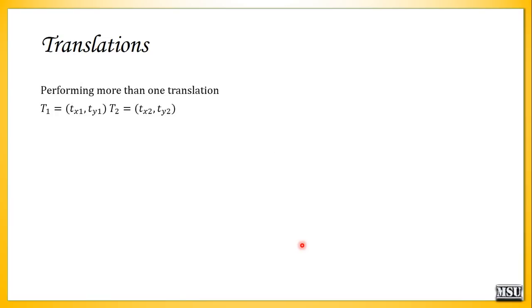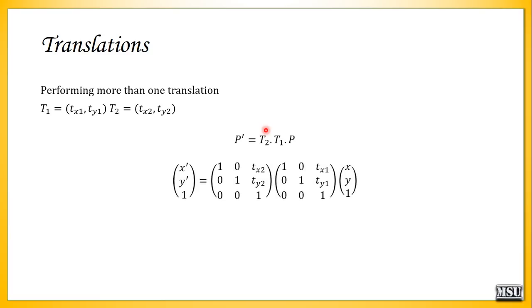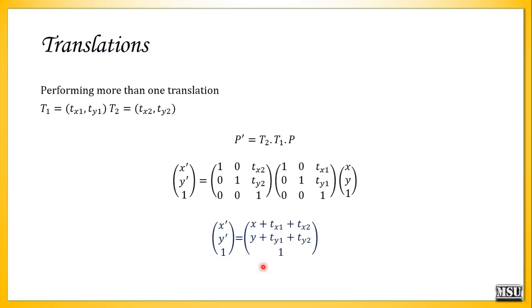Performing more than one translation is composite translation. We need two translation vectors t1 and t2 — you can include any number. A point p is first translated with t1, then with t2. Instead of multiplying three matrices separately, you can directly add the values: x' = x + tx1 + tx2, and y' = y + ty1 + ty2, with the homogeneous coordinate equal to 1.